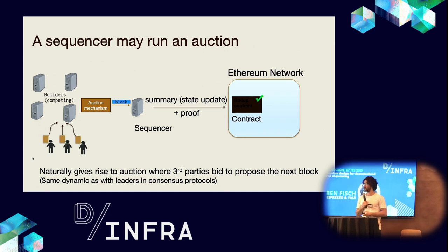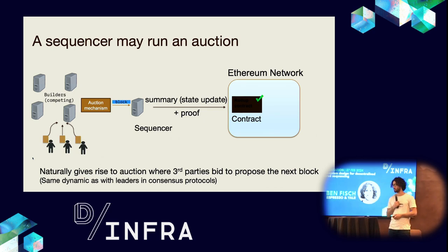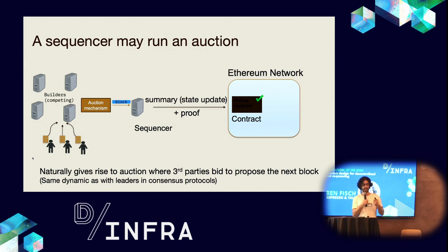There's a natural market tendency towards this because builders are specialized third parties that may know a better way to propose the next block, generating some economic surplus shared with the sequencer. This is exactly the same dynamic that plays out with leaders in consensus protocols. The leader of the Ethereum consensus protocol, which is randomly elected, acts as the sequencer for one Ethereum slot and may in turn run an auction.